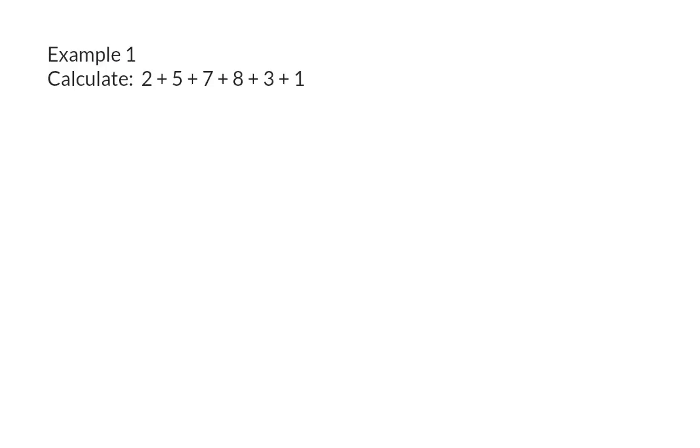Example 1. Calculate the following. Here we have a whole lot of terms that need to be added. Because we are adding, you can choose to simply start from left to right. In that case, here we will start with 2 plus 5 to get 7. Then add 7 to get 14. 14 plus 8 gives me 22. Adding another 3 will get me to 25. And then plus 1 to have a final answer of 26.